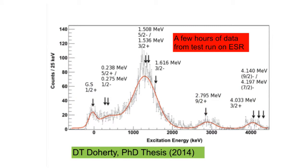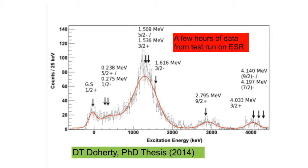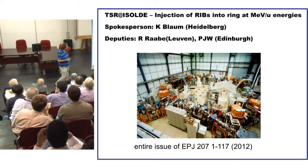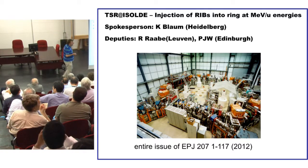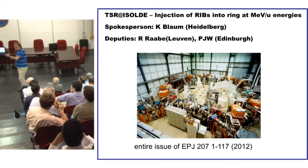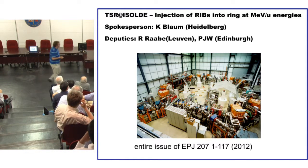This was part of the thesis of Dan Doherty. In the previous experiments with stable beams, if you use a radioactive beam on the ESR it takes about a minute to cool it and reduce the energy. So what you really want to do is inject the ions immediately at the energy of interest. This is a new project called TSR at ISOLDE, which is to move a heavy-ion storage ring from the Max Planck Institute in Heidelberg to CERN, to go on the end of ISOLDE.